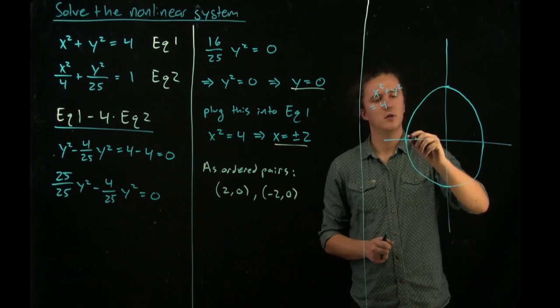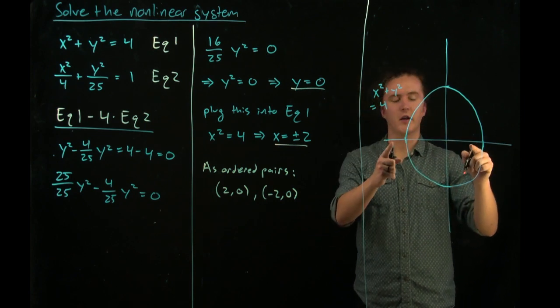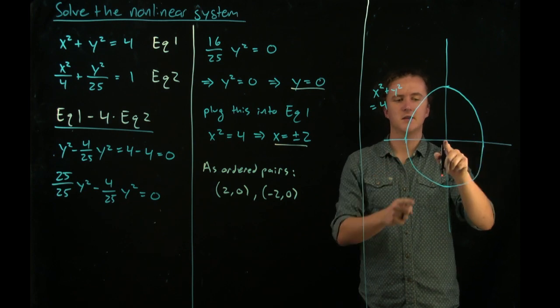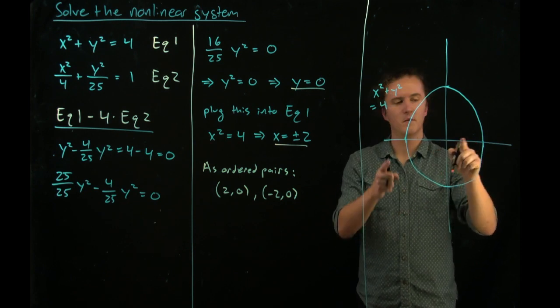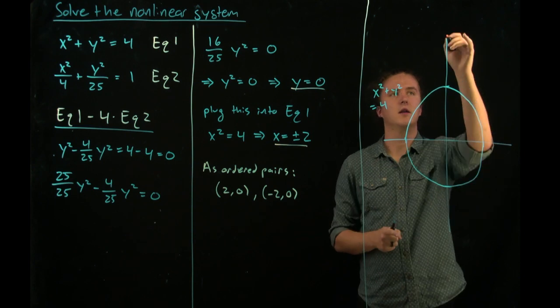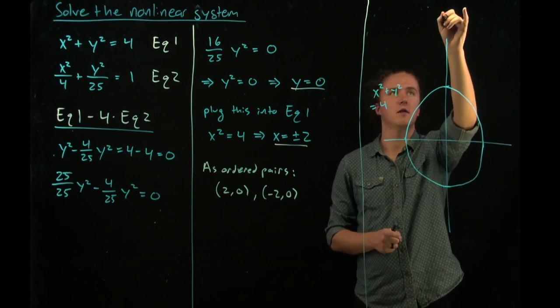And equation 2, we'll talk about how to graph these in chapter 10, is centered at the point 0, 0 also with minor axis 2 and major axis 5.